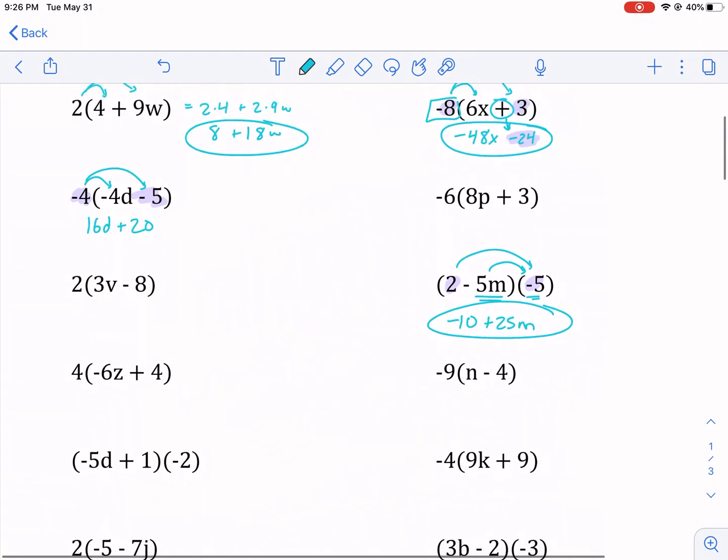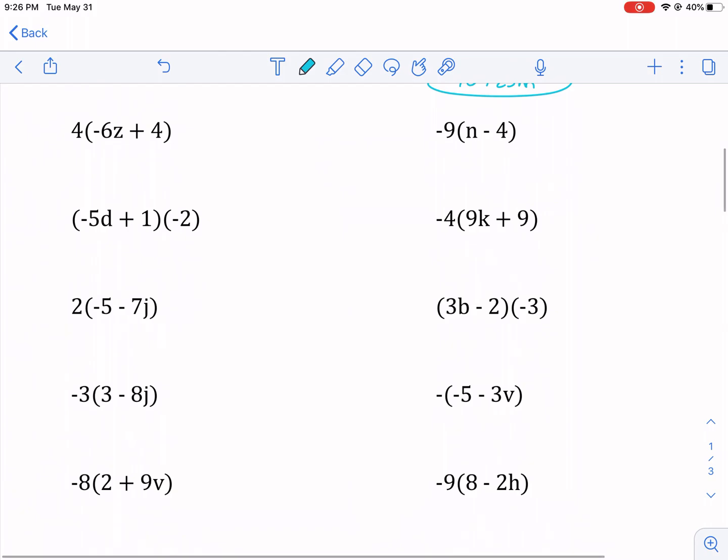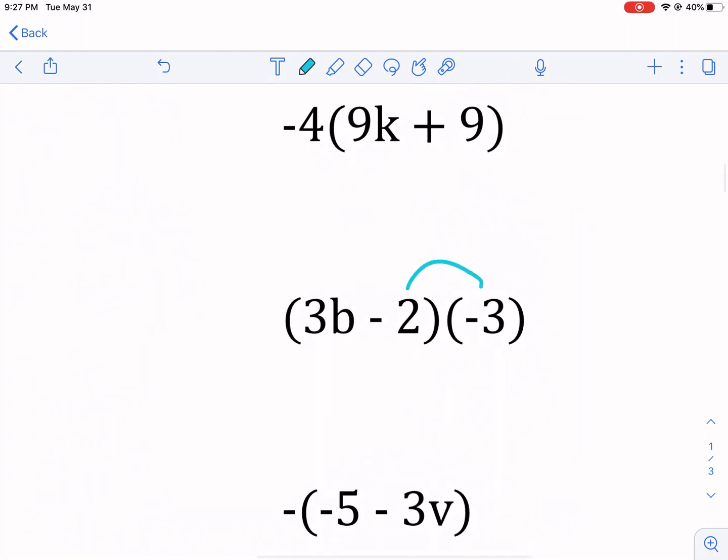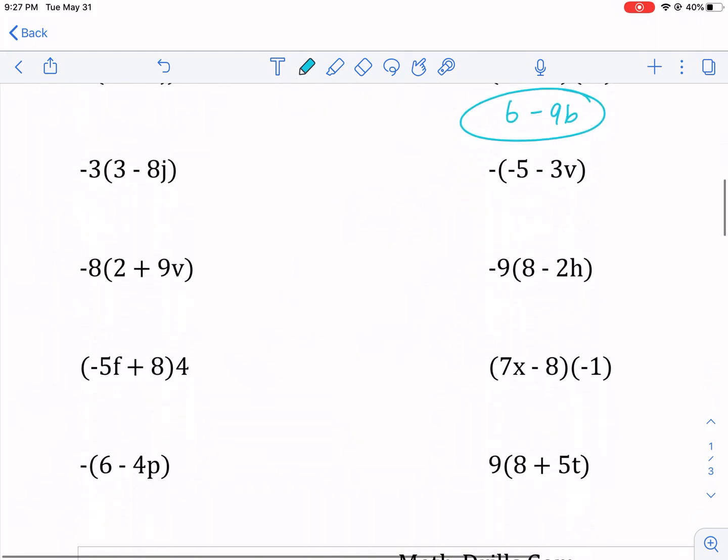A couple other oddities I want to address before letting you guys go. Again, if we have something outside here, we can even go this way. Just a matter of how you consider it. So negative 3 times negative 2, that gives us positive 6. Be careful with negatives. It trips people up a lot. Technically, I should put that variable first.